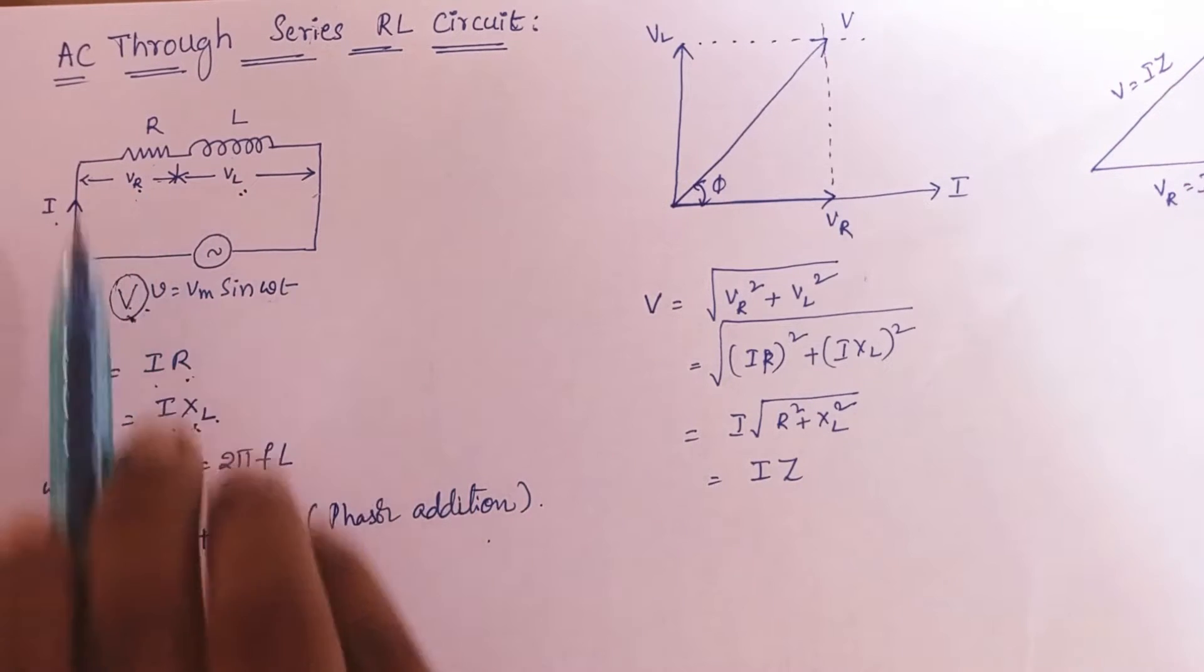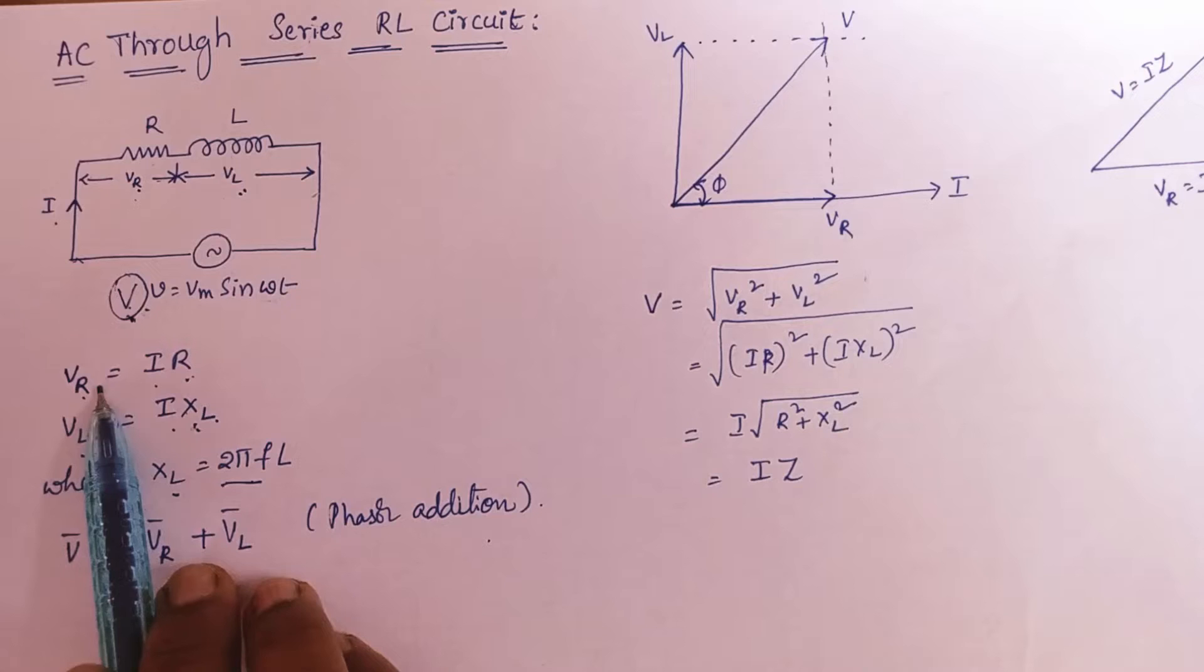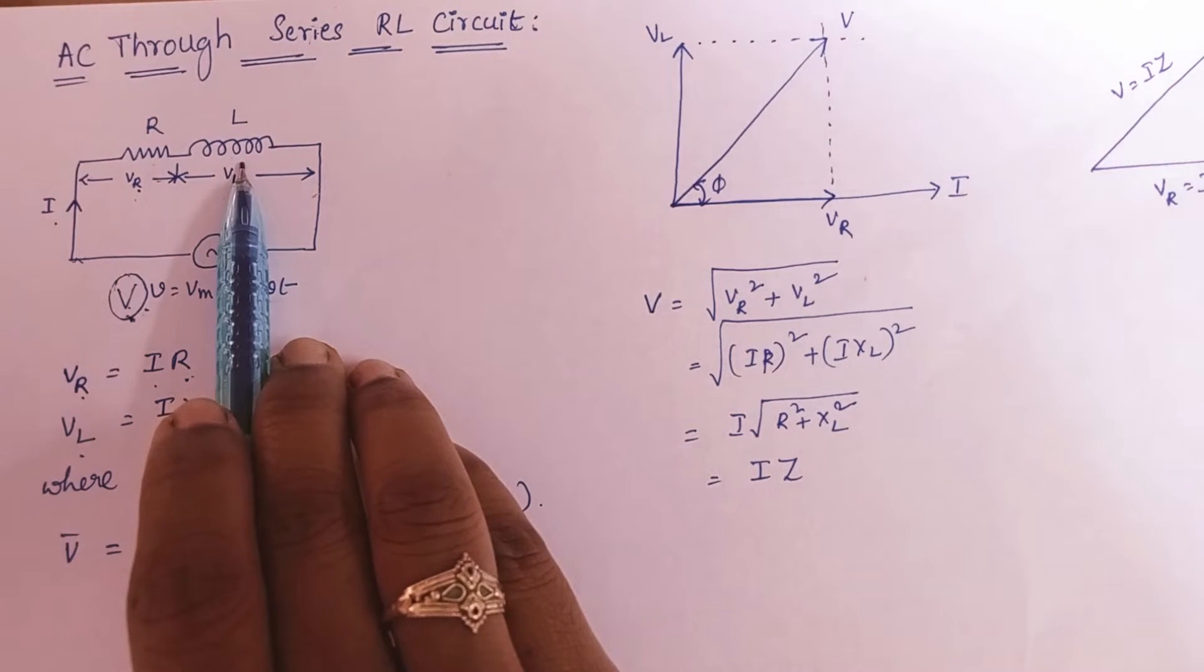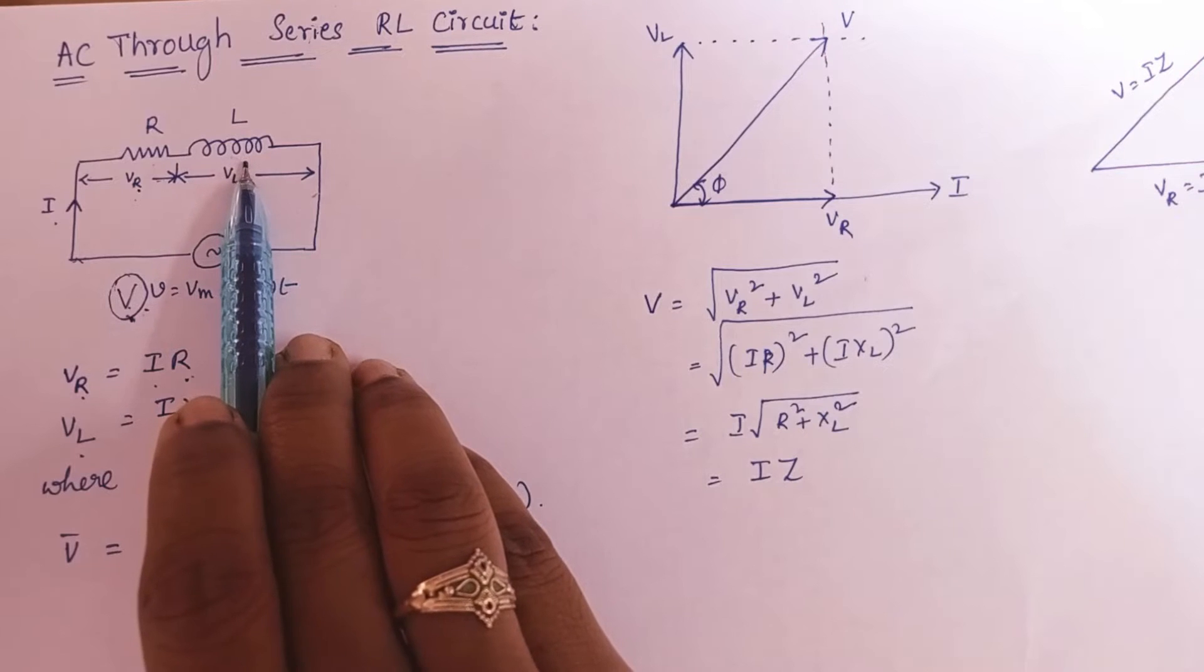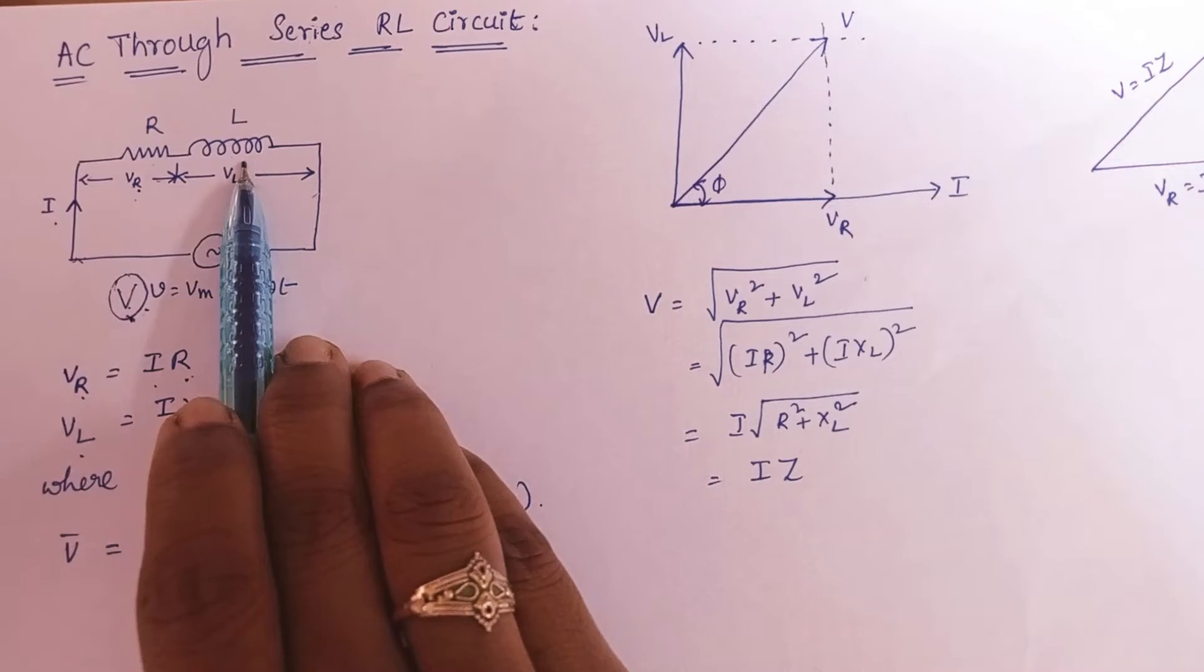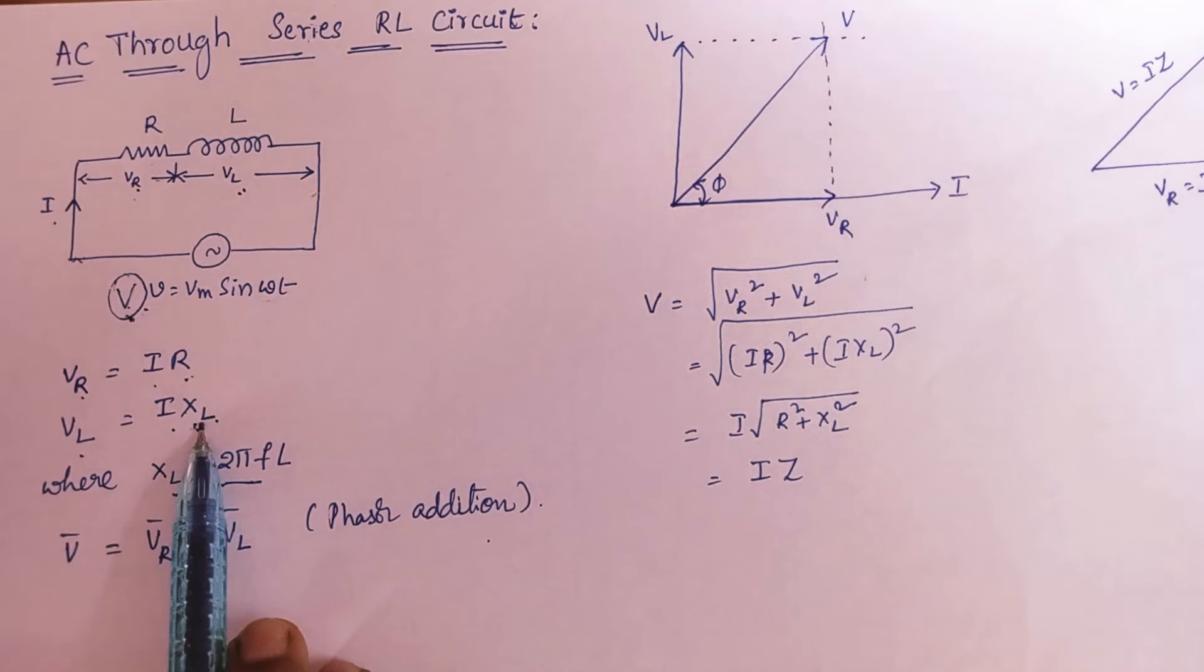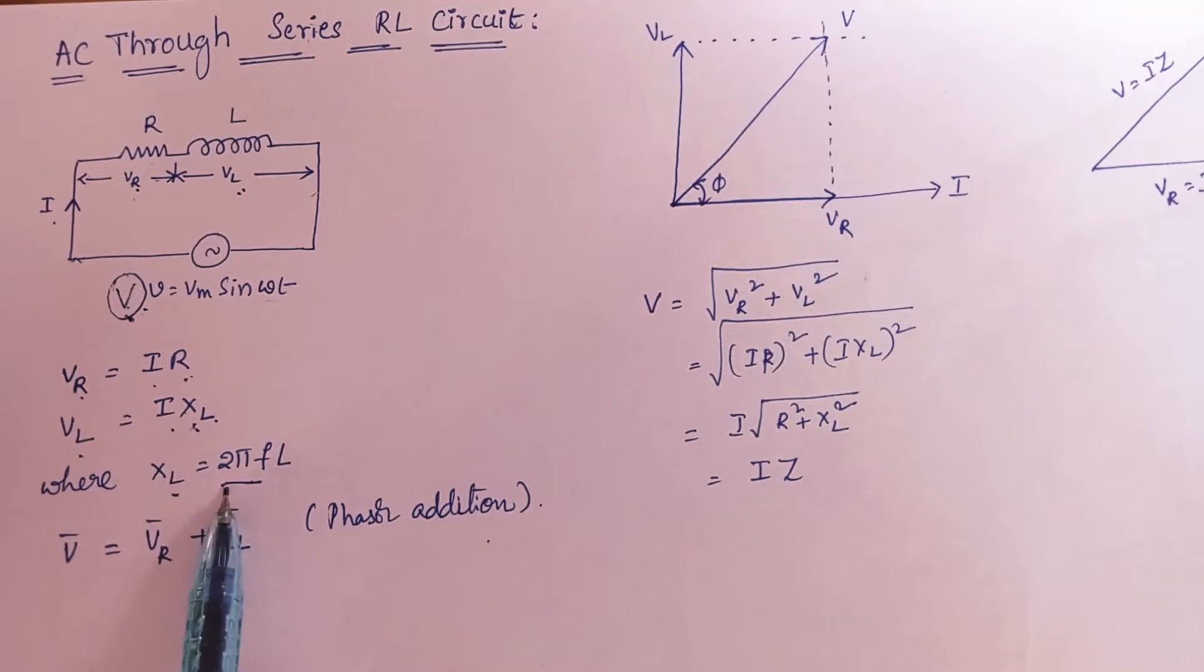So Vr voltage drop across the resistor is IR using Ohm's law and inductor is a reactive element whose reactance is XL. So voltage across the inductor can be considered as IXL. Both R and XL will be in Ohms. Whereas XL is nothing but omega L and omega is 2 pi F. I wrote it here already.